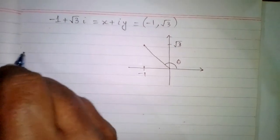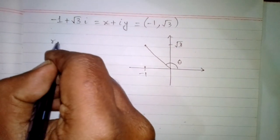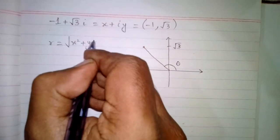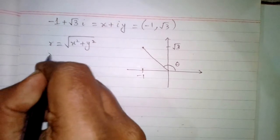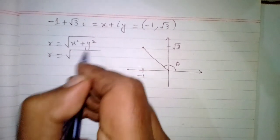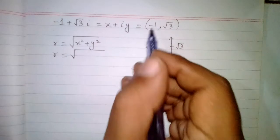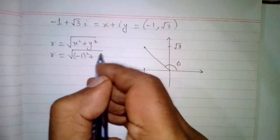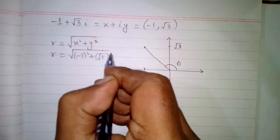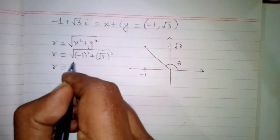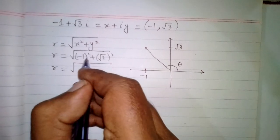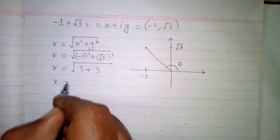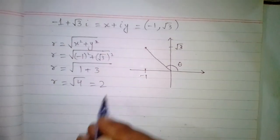First we will find the modulus of the complex number, which is r equals square root of x squared plus y squared. So r equals square root of minus 1 squared plus root 3 squared, which gives square root of 1 plus 3, so r equals square root of 4, which is equal to 2.